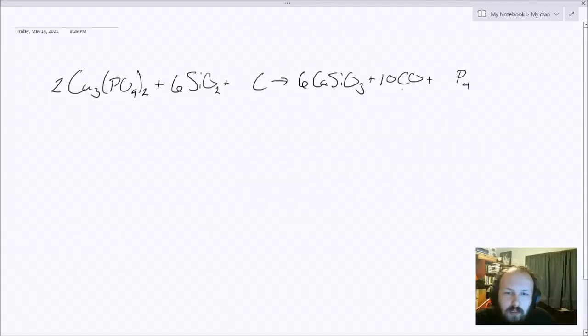All I need to balance is the carbon, which I have ten on the right, so I just need a ten there. I check to make sure I can't reduce it. There's a one in front of this phosphorus, so it can't be reduced overall, and I have it balanced.